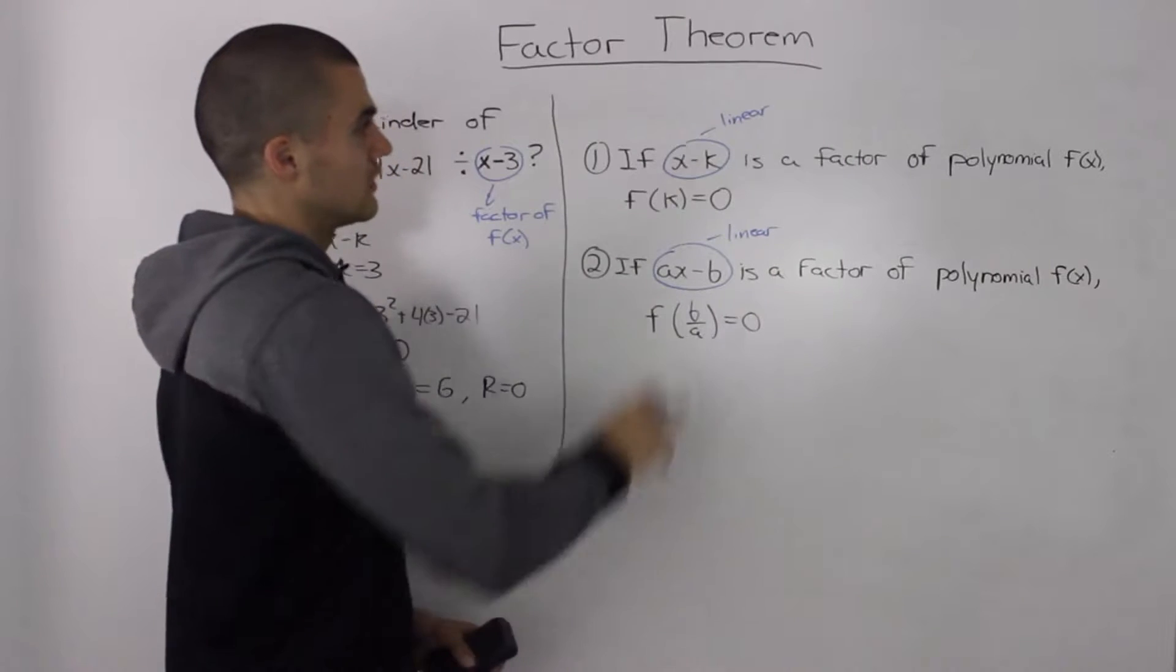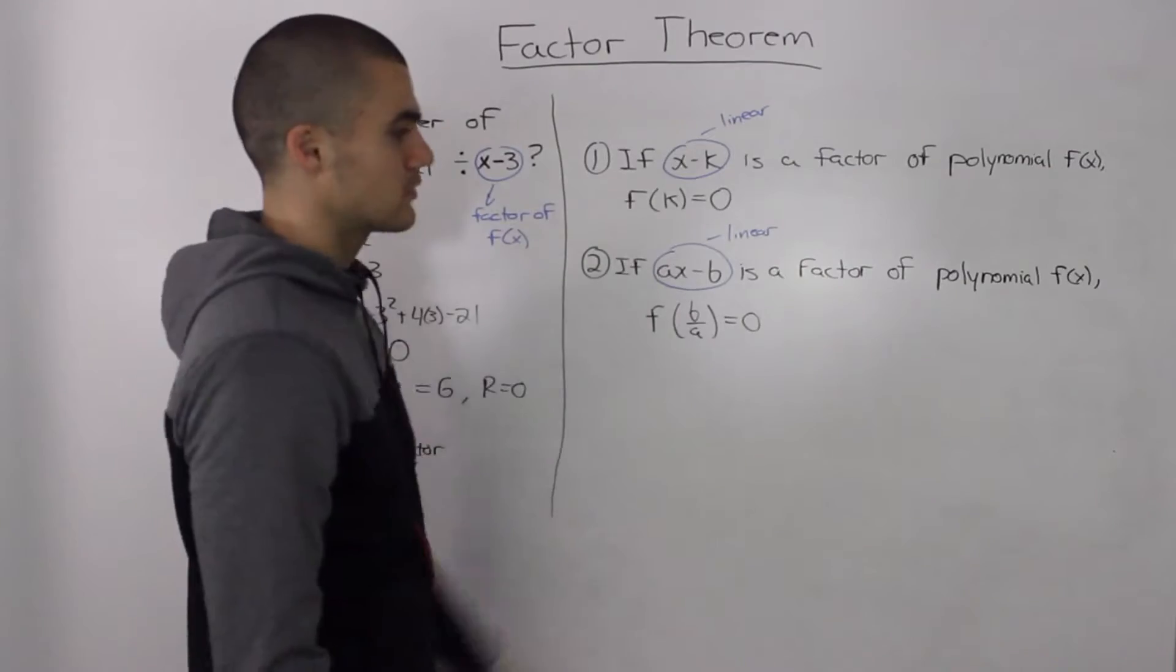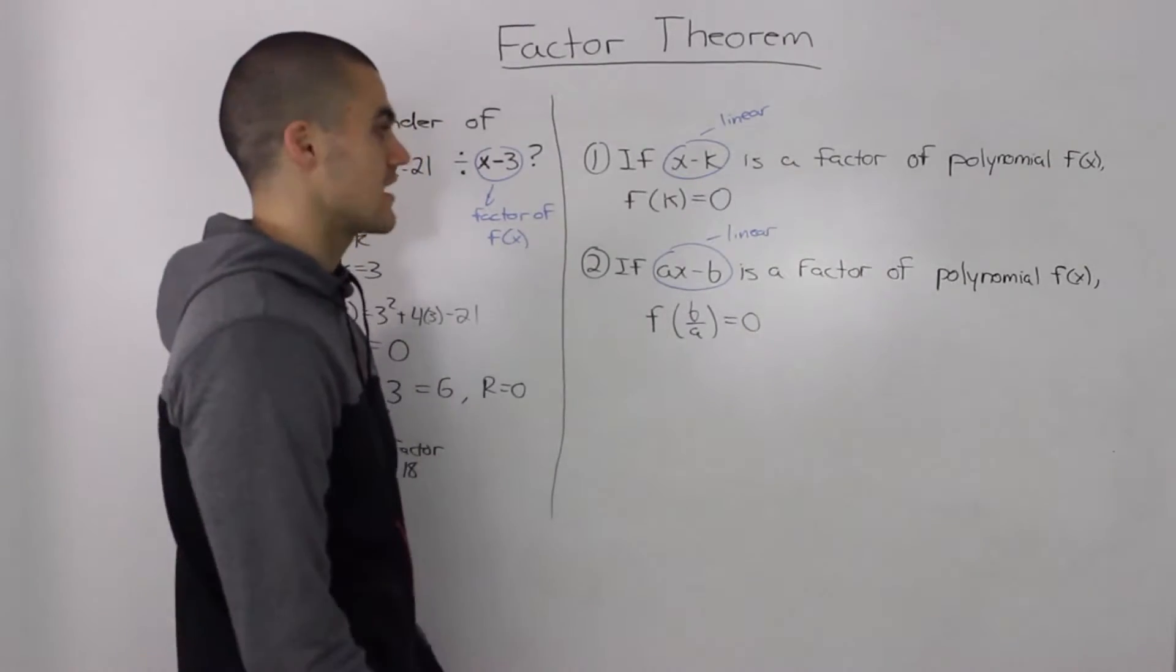You can check for linear factors of a dividend by quickly using the remainder theorem. If you get a remainder of 0, that means it's a factor.